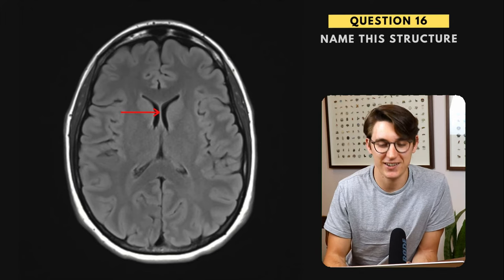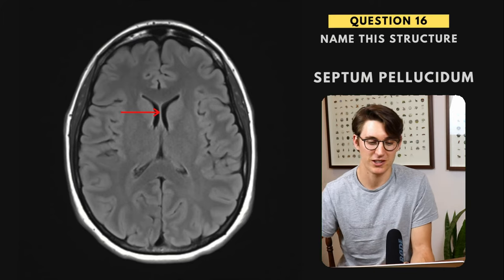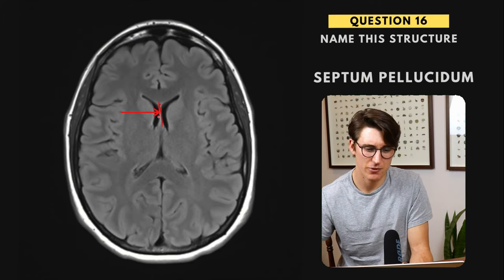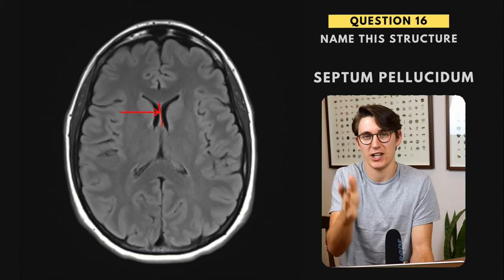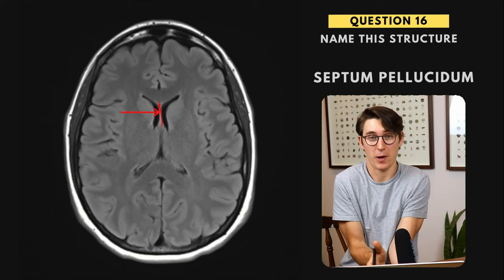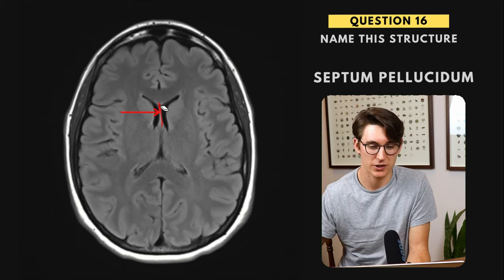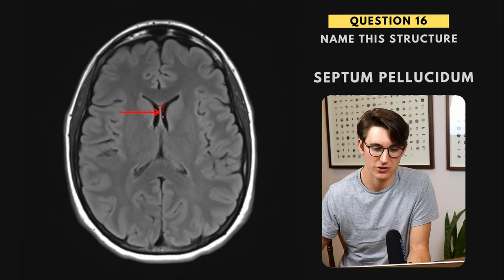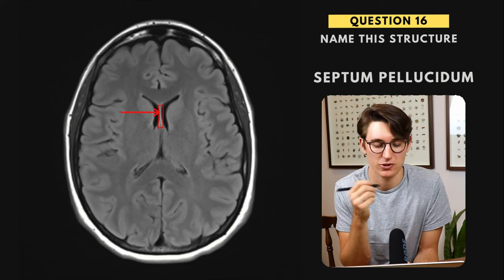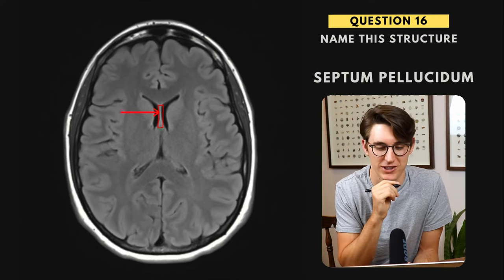Question sixteen — another relatively easy one, but sometimes a difficult name to bring up: the septum pellucidum. This piece of tissue separates our lateral ventricles, and there are actually two separate tissue planes that abut each other with a potential space between them. Sometimes we can have separation of those two planes of tissue, giving a cavum septum pellucidum, which is just a normal anatomical variant and nothing to worry about when you see it on a scan.